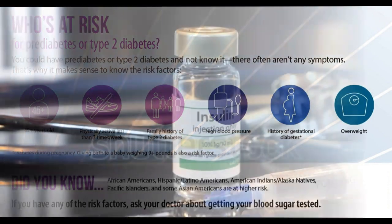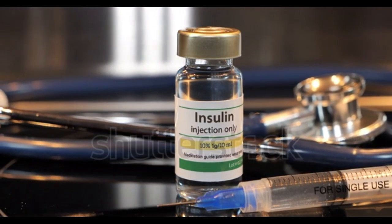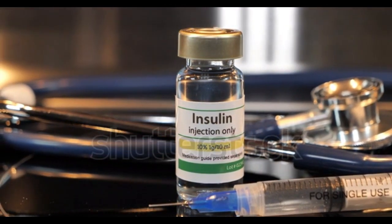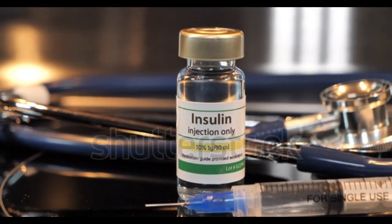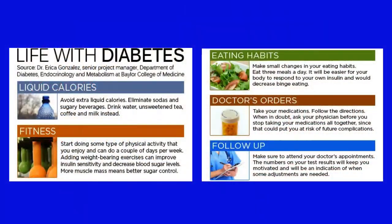What health problems can people with diabetes develop? Over time, high blood glucose leads to problems such as heart disease, stroke, kidney disease, eye problems, dental disease, nerve damage, and foot problems. You can take steps to lower your chances of developing these diabetes-related health problems.